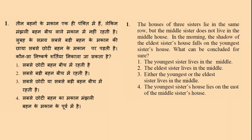Friends, the first problem of this episode: the houses of three sisters lie in the same row, but the middle sister does not live in the middle house. In the morning, the shadow of the elder sister's house falls on the youngest sister's house. What can be concluded for sure? Option 1: the youngest sister lives in the middle. Option 2: the eldest sister lives in the middle. Option 3: either the youngest sister or the eldest sister lives in the middle. Option 4: the youngest sister's house lies on the east of the middle sister's house.